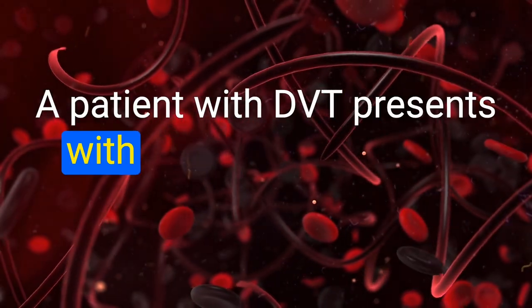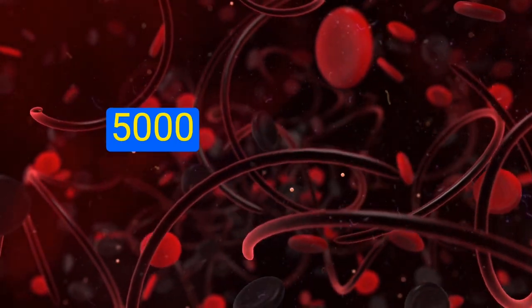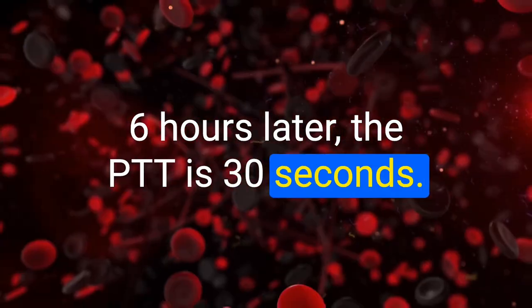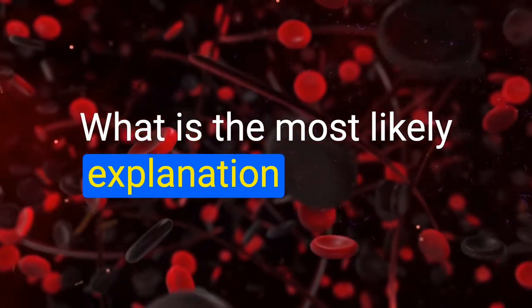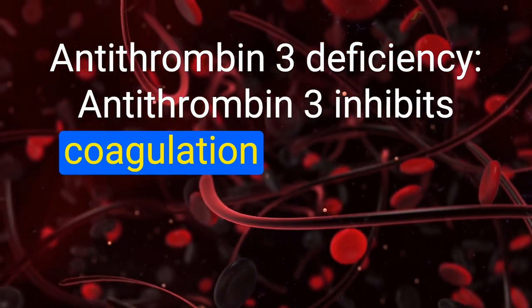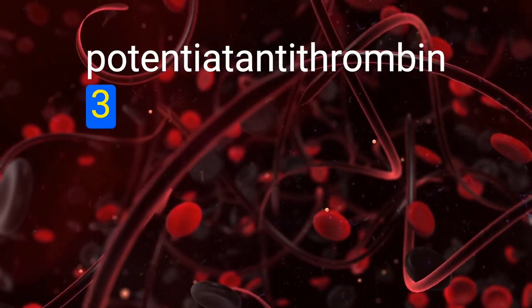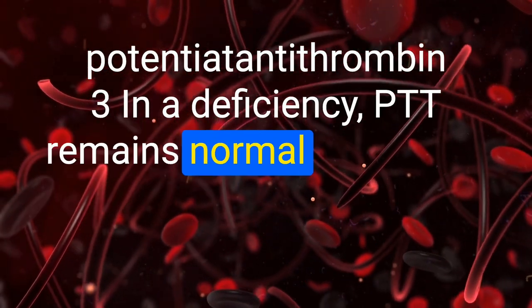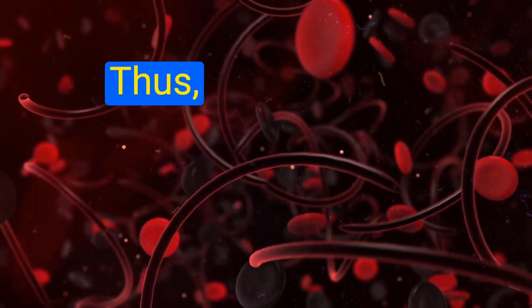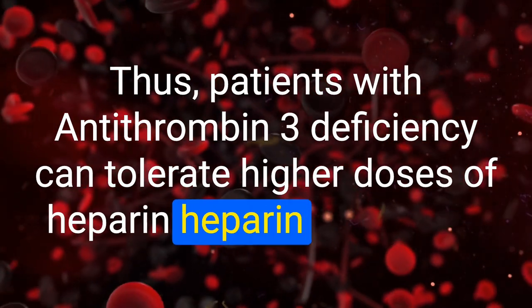A patient with DVT has a PT of 11 seconds and PTT of 26 seconds. 5,000 IU of heparin is administered; six hours later, the PTT is 30 seconds. What is the most likely explanation? Antithrombin III deficiency. Antithrombin III inhibits coagulation by inhibiting thrombin (factor 2) and factor 10. In a deficiency, PTT remains low because heparin requires antithrombin III to achieve its intended effect. Thus, patients with antithrombin III deficiency can tolerate higher doses of heparin — heparin resistance.